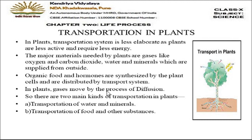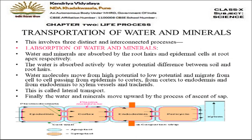Organic food and hormones are synthesized by the plant cells in their own body and have to be distributed by the transport system. What has to be transported includes water, minerals, food, and hormones. Gases move by the process of diffusion — particles move from high concentration to low concentration. There are two main kinds of transportation in plants: transportation of water and minerals, and transportation of food.